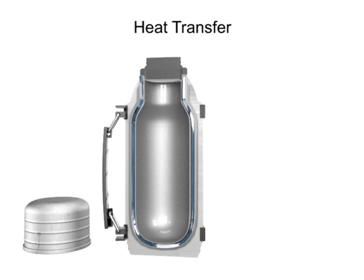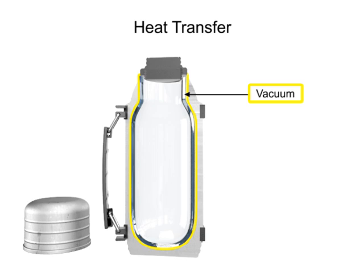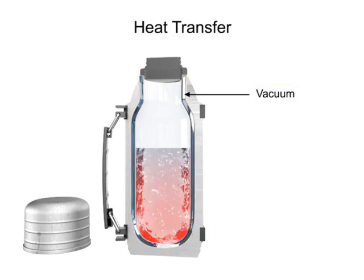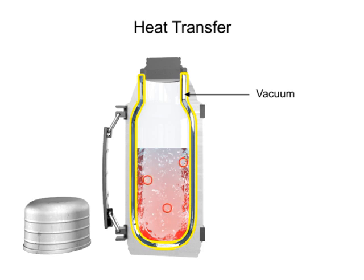In between the silvered glass walls of a thermos lies a vacuum. In the case of a hot liquid, heat transfer by convection through the vacuum is greatly restricted due to the absence of air molecules necessary to facilitate the transfer of heat. The lack of physical contact between the inside and outside walls of the thermos due to this airless space also greatly inhibits the movement of heat by conduction.